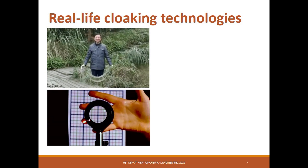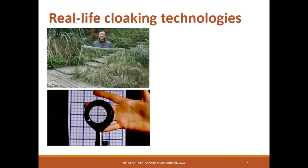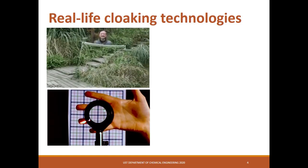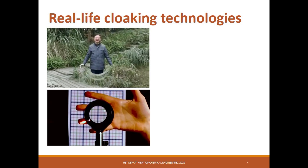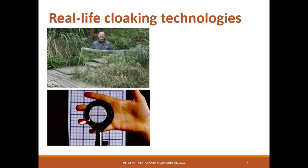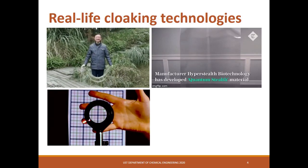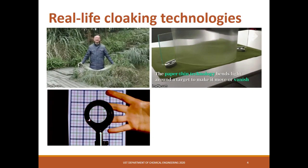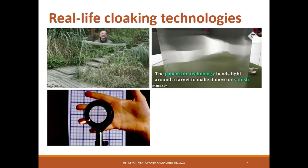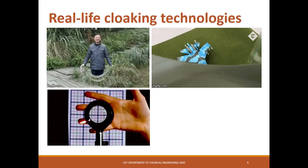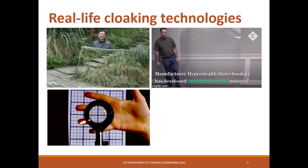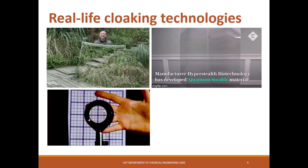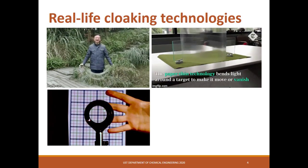Researchers from the University of Rochester, on the other hand, have devised a close-to-reality invisibility cloak by using a flat-screen display to widen the range of angles that can be hidden from view. The idea is to pass light around the material as if it isn't there. In 2019, Hyper-Stealth Biotechnology's invisibility cloak called Quantum Stealth can make an object or person close to invisible to the naked eye. Though this technology is still under prototyping stage, it was developed primarily for military purposes to conceal agents and equipment such as tanks and jets.